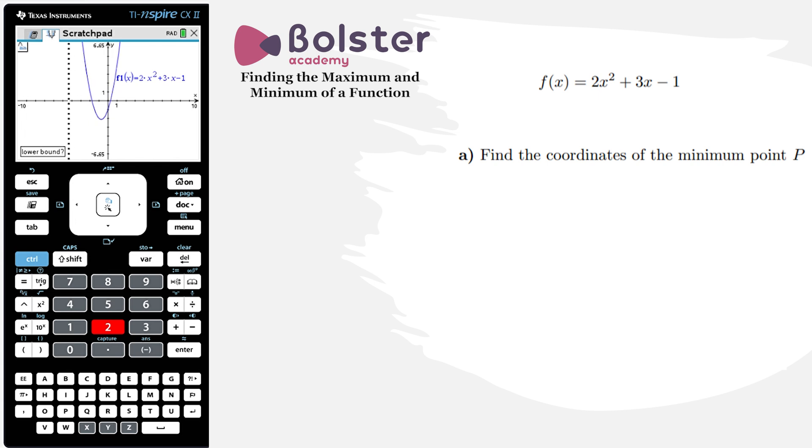So I'm just going to choose my lower bound to the left of the minimum point on the graph and I'm going to choose my upper bound to the right of the minimum point. And the calculator will search between these two bounds to find the minimum point.